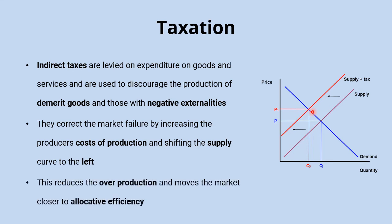That's how the tax addresses the market failure — it reduces the overproduction, moves the market equilibrium closer to a more socially optimal level, and moves it towards allocative efficiency, because the negative externalities are now more being accounted for. The quantity of output is reduced from Q to Q1. Another useful phrase is that the tax internalizes the externality, meaning the producer is now forced to take account of at least some of these external costs, so overproduction is reduced.